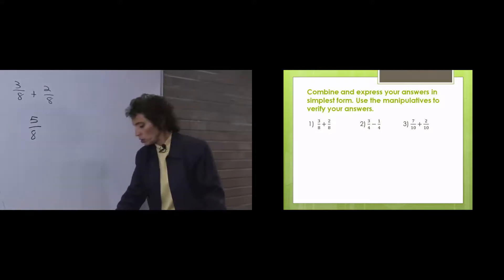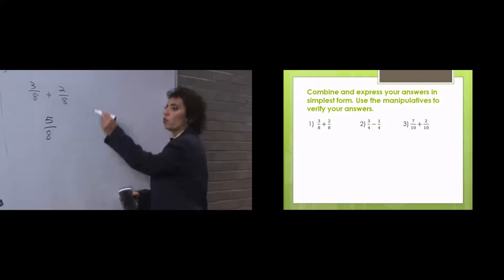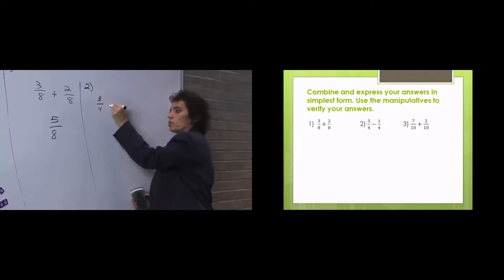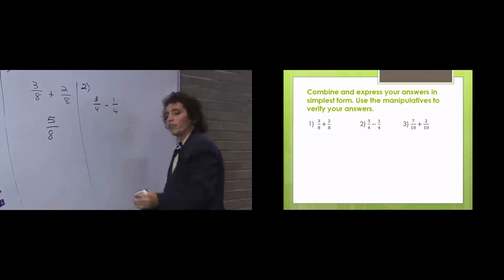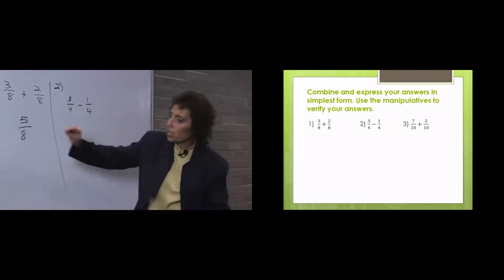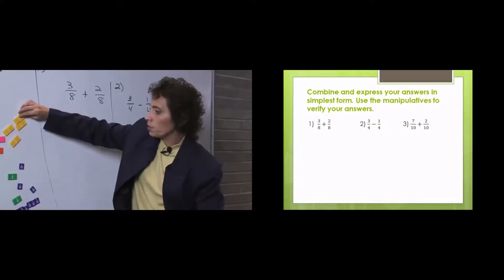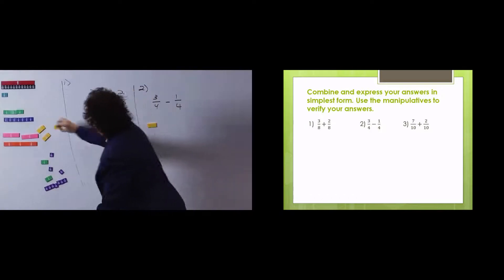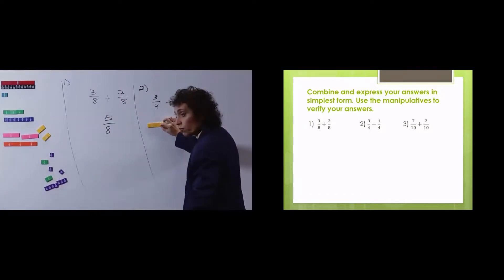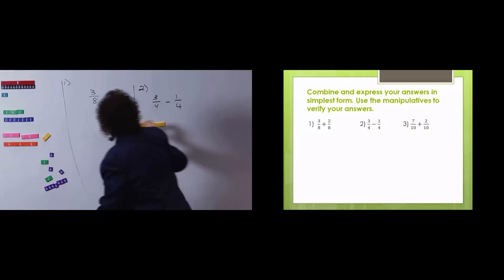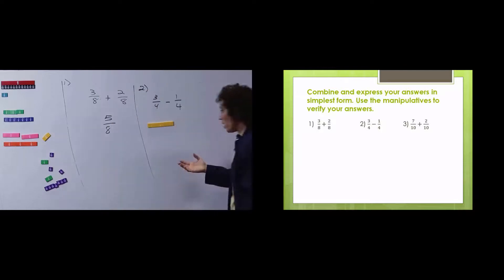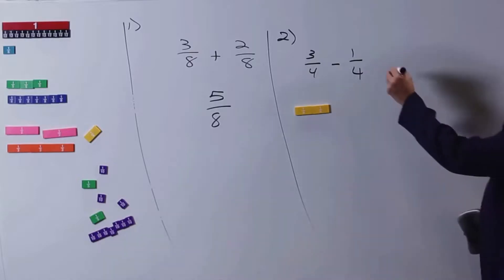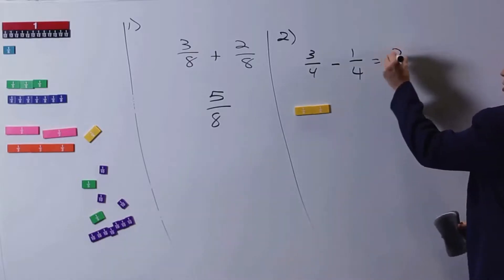So let's look at this one: 3 fourths minus 1 fourth. Well, let's think about this. If I have 3 fourths — if I have 3 of these pieces — 3 fourths, these are called fourths pieces. 3 fourths, and I take away 1 of them, how many do I have? Well, I have 2 fourths.